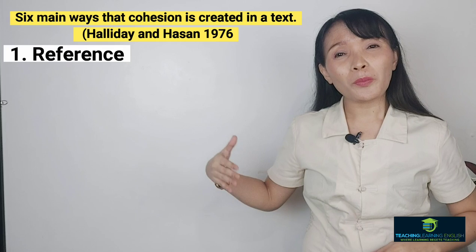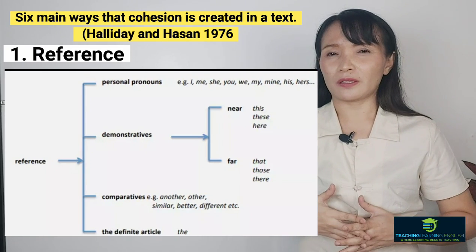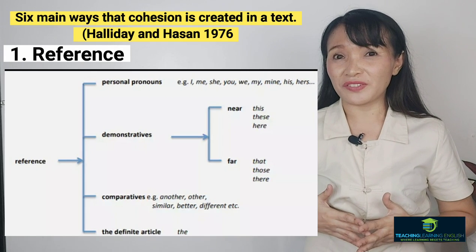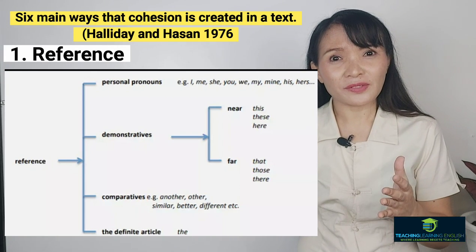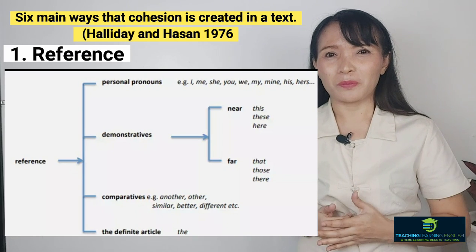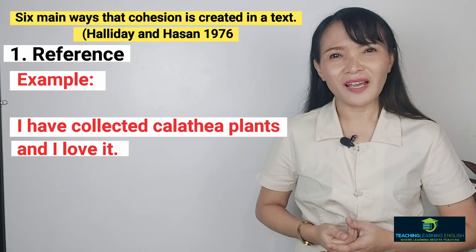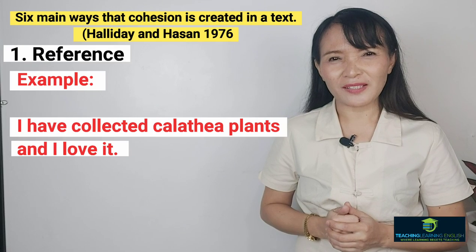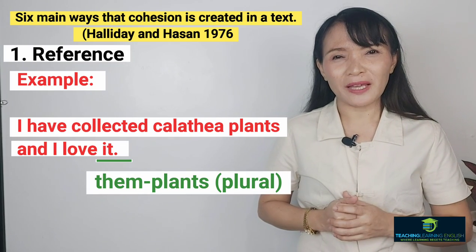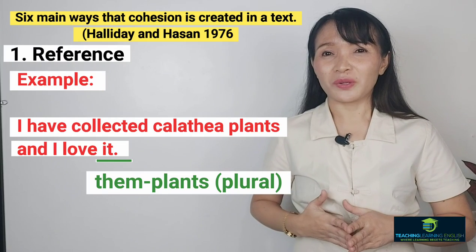The first is reference. Reference includes personal pronouns, demonstratives, comparatives, and the definite article 'the.' Many times we are not conscious of using reference correctly. We need to know what kind of reference is involved, what the reference refers to, and where the original referent can be found in the text. For example: 'I have collected calathea plants and I love it' — this is wrong, because 'it' should be 'them' since it refers to plants.